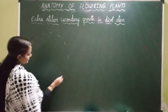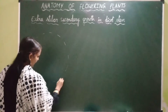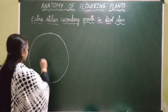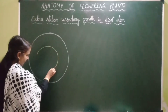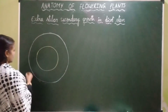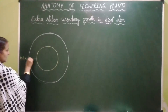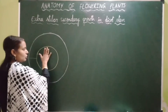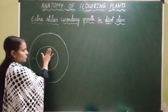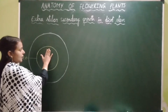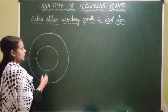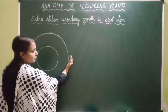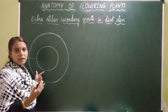This is the transverse section of dicot stem. In this dicot stem, this is vascular cambium which is formed during secondary growth — I am writing vascular cambium as BC. When this vascular cambium undergoes cell division, it cuts off cells towards the outer side and even towards the inner side. It produces cells more and more towards the inner side which get re-differentiated into secondary xylem.